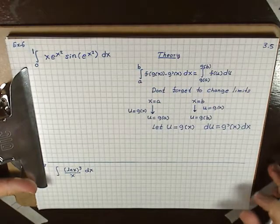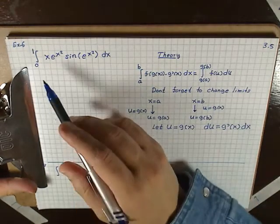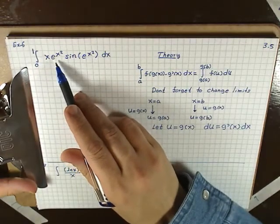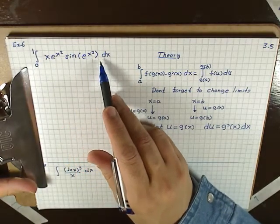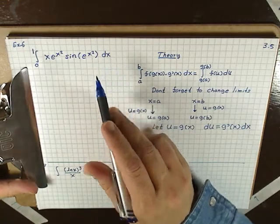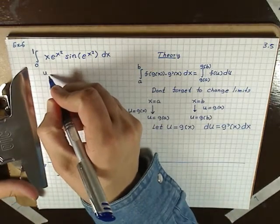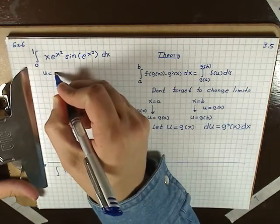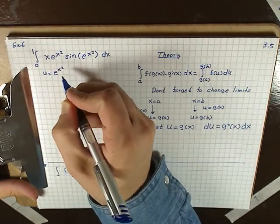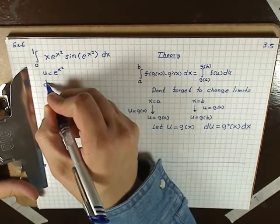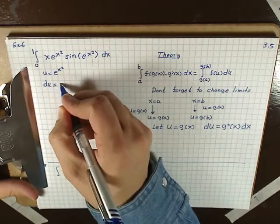Integration by substitution, example 2. Here we have the integral from 0 to 1 of x·e^(x²)·sin(e^(x²)) dx. We let u equal the inside function; in this case u equals e^(x²), and du equals — taking the derivative — e^(x²).